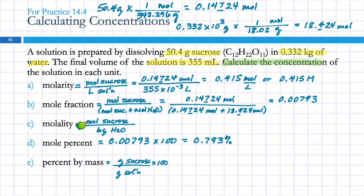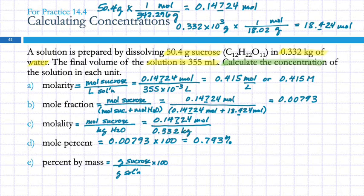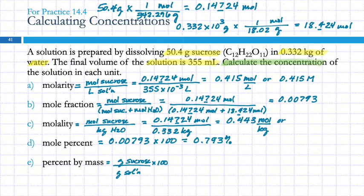Molality: moles of sucrose — we have that number, 0.14724 moles — divided by kilograms of solvent (kilograms of water). That's why they gave us the mass in kilograms — they were being nice. So 0.14724 divided by 0.332 gives 0.443 moles per kilogram, or 0.443 m (molal). Notice that the molarity and molality are pretty close to each other — both 0.4-something — not exactly the same but in the same ballpark.